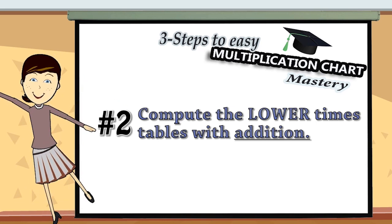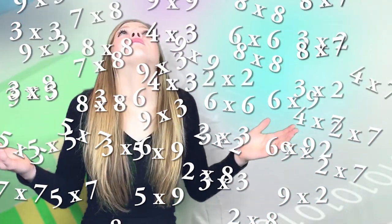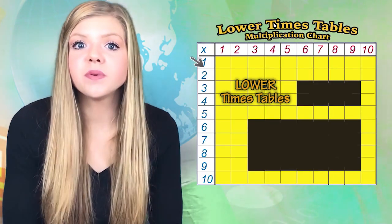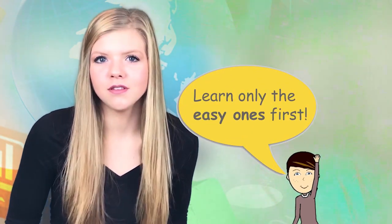Step number two: compute the lower times tables with addition. Most kids think that they have to memorize every number on the chart, but they don't. Here's the secret — more than half of the times tables can be easily computed through addition. I like to call these the baby times tables. So step two is to present the lower times tables only, and with these easy-peasy lower tables, kids can just use their addition skills if they get stuck.